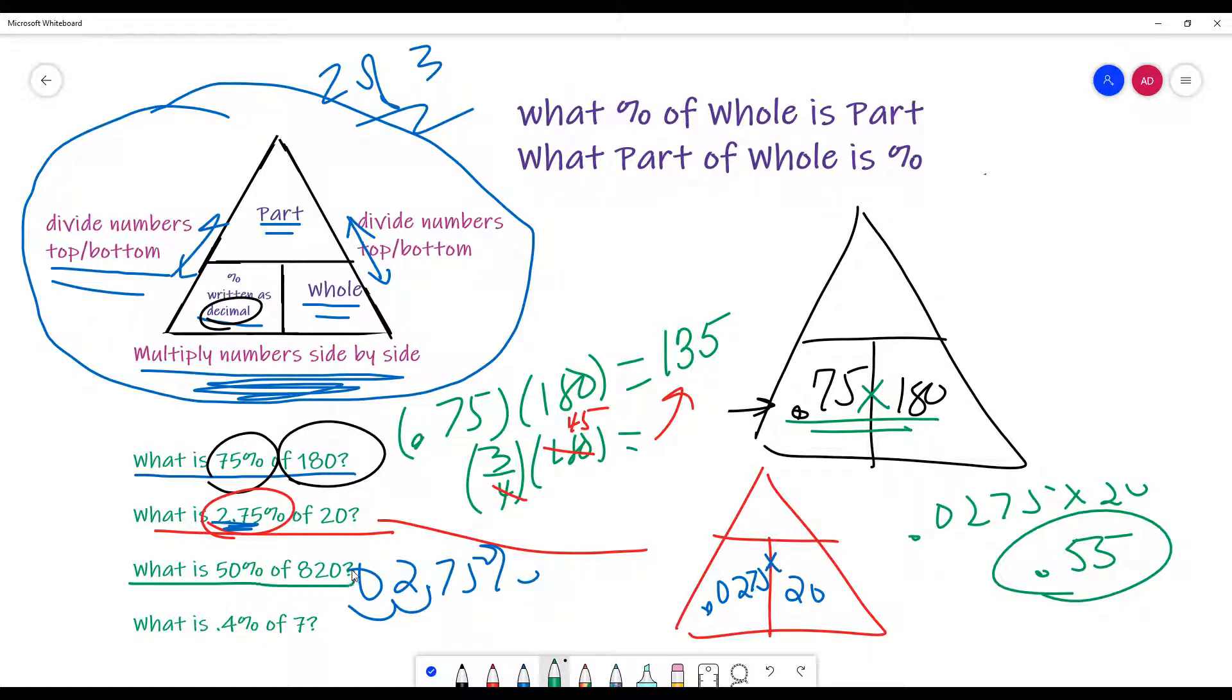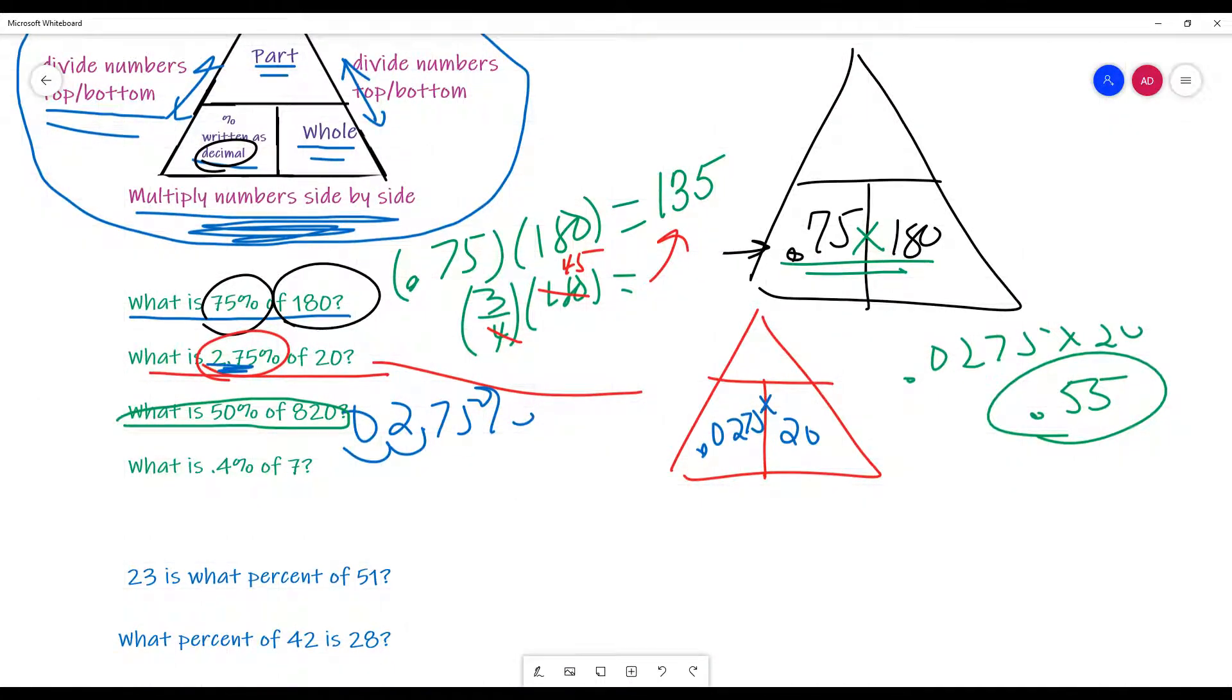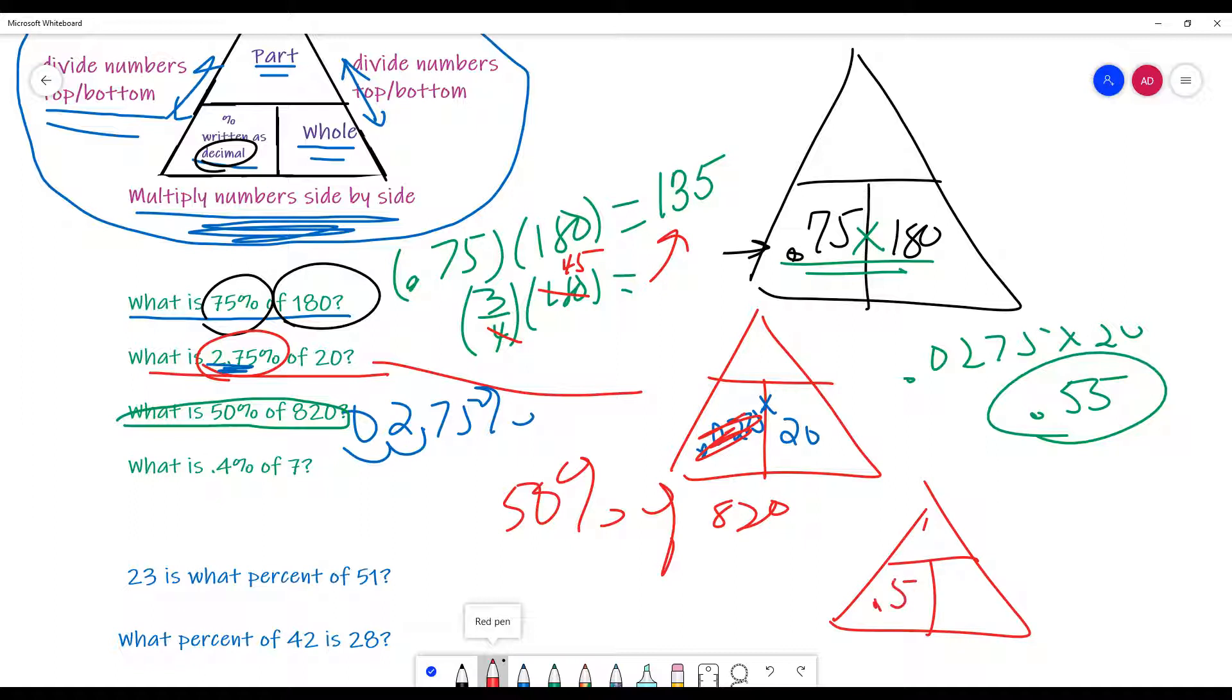Now, this next one over here actually is kind of a mental one. We can kind of do it mentally. What do I mean by that? 50% of 820. Well, we know this, if I do my little triangle, this is 0.5 and this is 820. And when I multiply these two together, 0.5 times 820, I'm actually going to get 410. Now, the mental way to do that, just don't forget, 50% is one half. So, I actually just take half the number. Half of 820 is 410, and there's your answer.